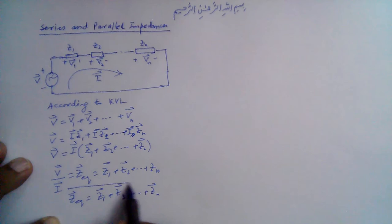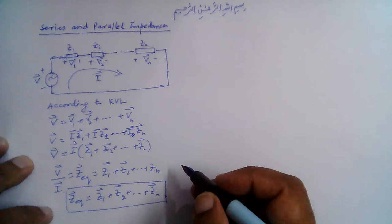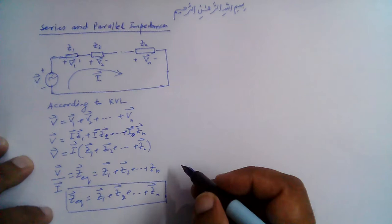We must keep in mind that each z is a complex number, so this is the addition of complex numbers, and the equivalent impedance will also be complex.